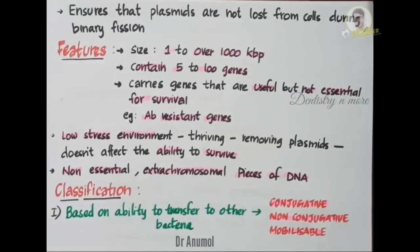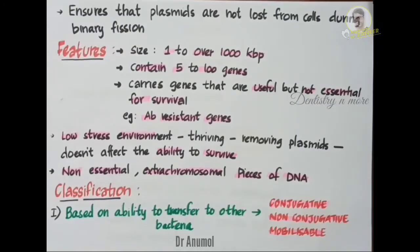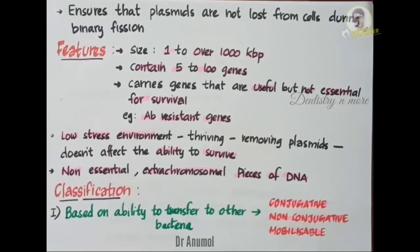The first type is conjugated plasmids. As the name suggests, they perform conjugation and transfer of plasmids to another bacteria. Example: F plasmids. The second type is non-conjugated plasmids — they are incapable of initiating conjugation, and hence can only be transferred with the assistance of conjugated plasmids. Example: R plasmids.